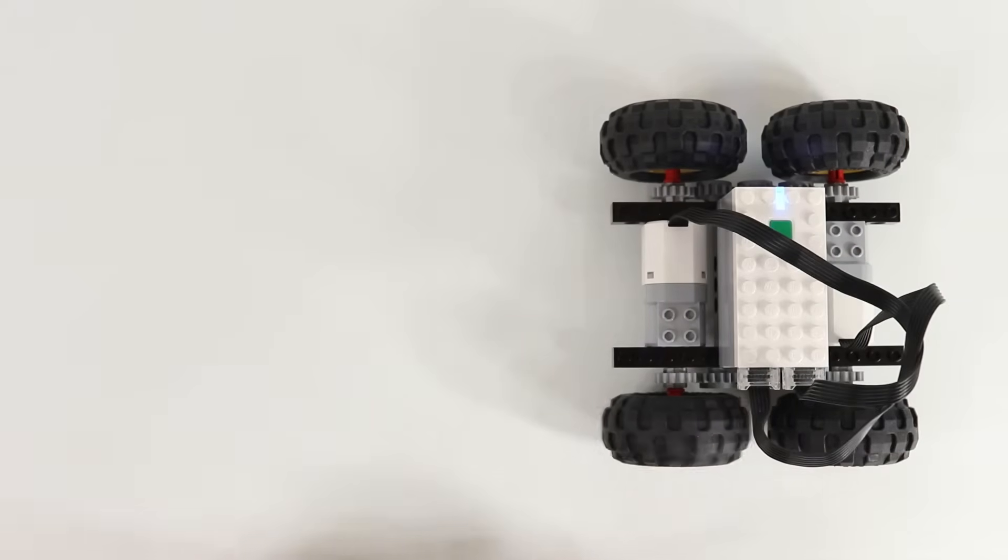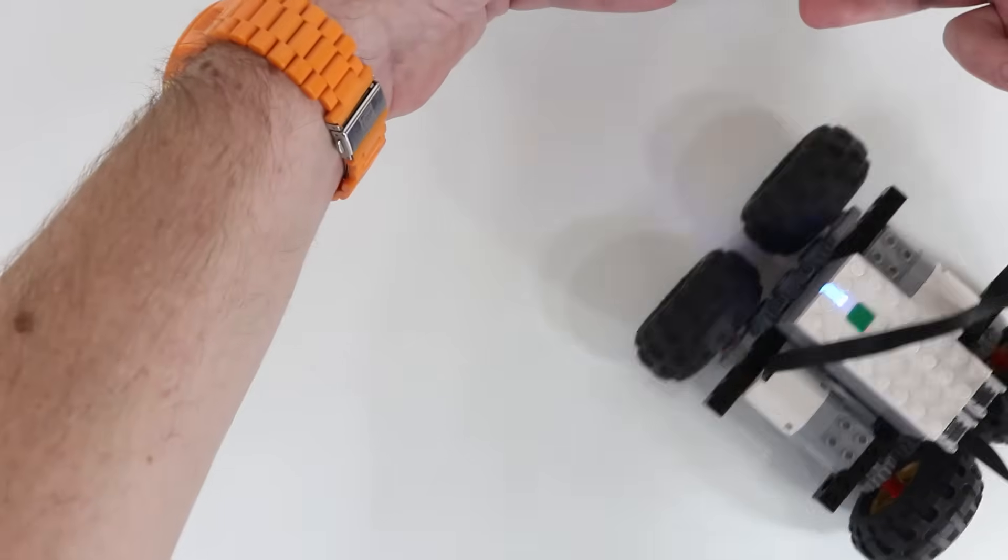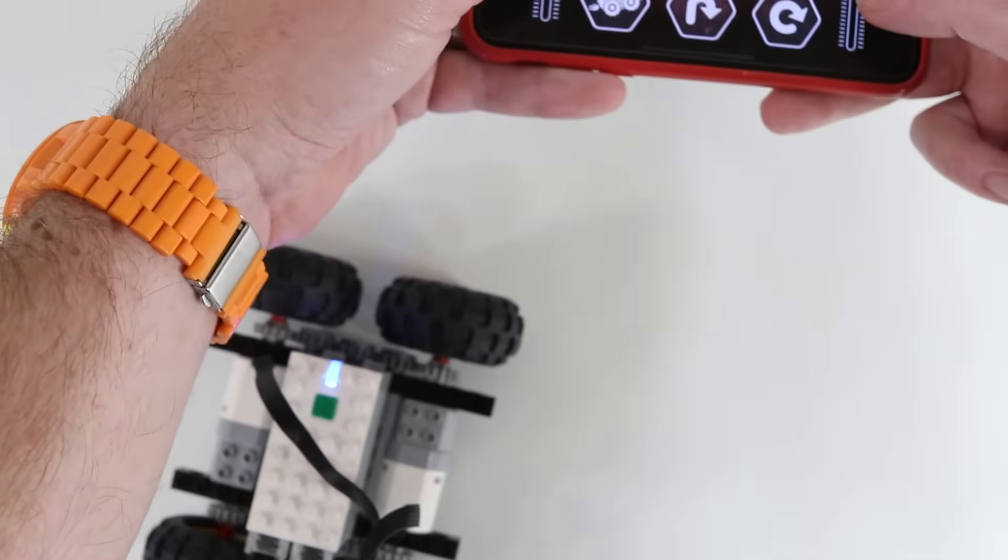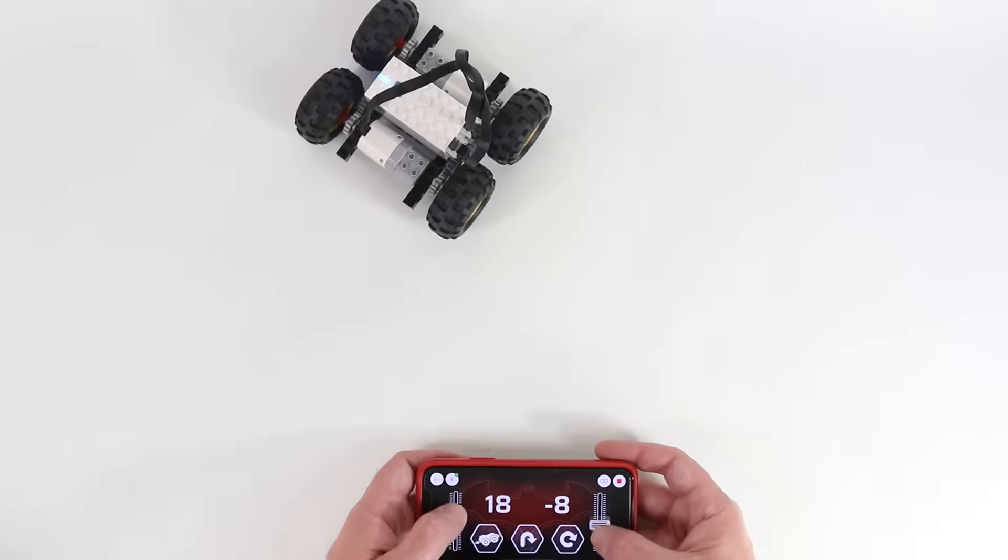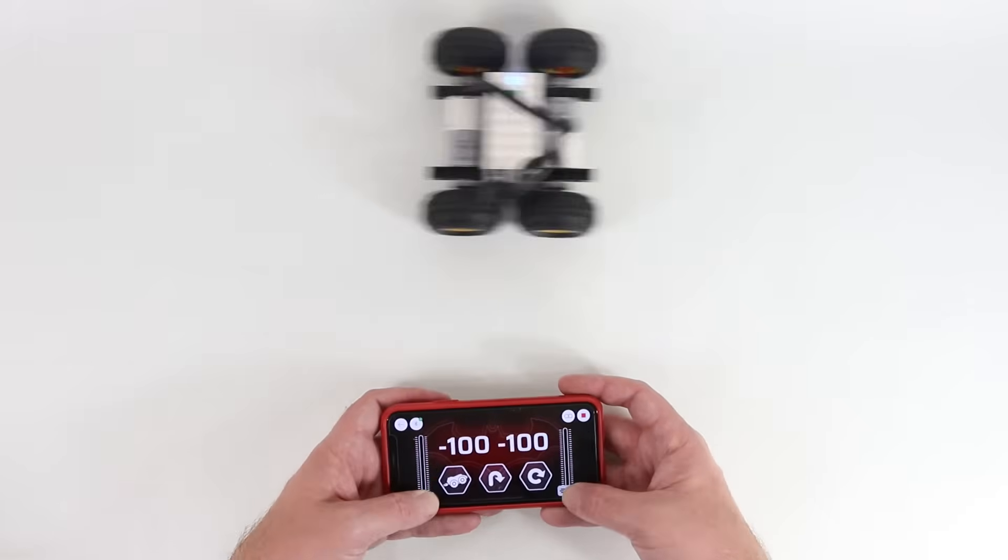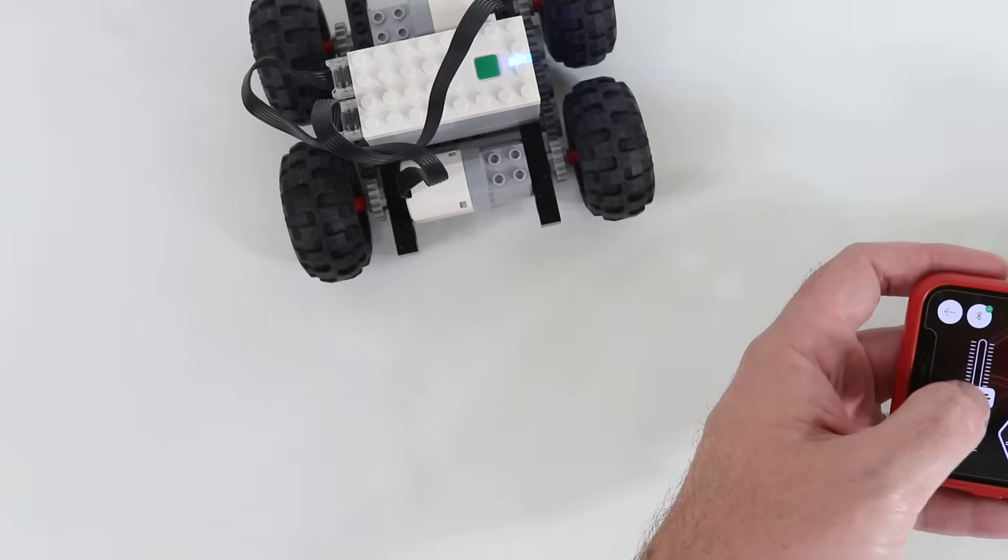And now you can see I can drive this RC car around. I can steer. Now this does not actually have steering wheels. It does not have differential. So you're going to get this shuttering. You're going to get a little bit of shuttering when you steer.